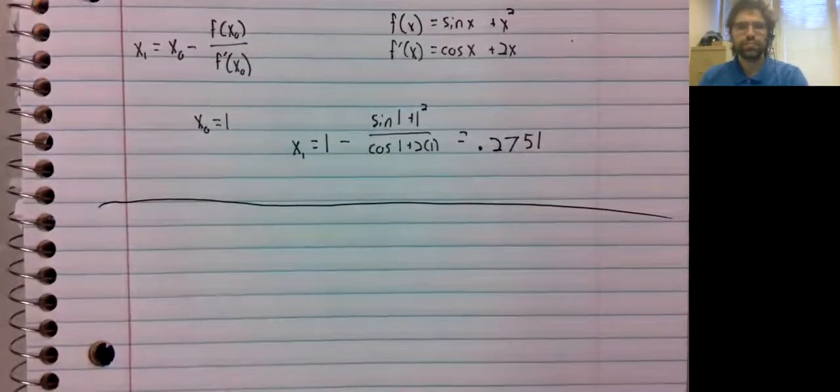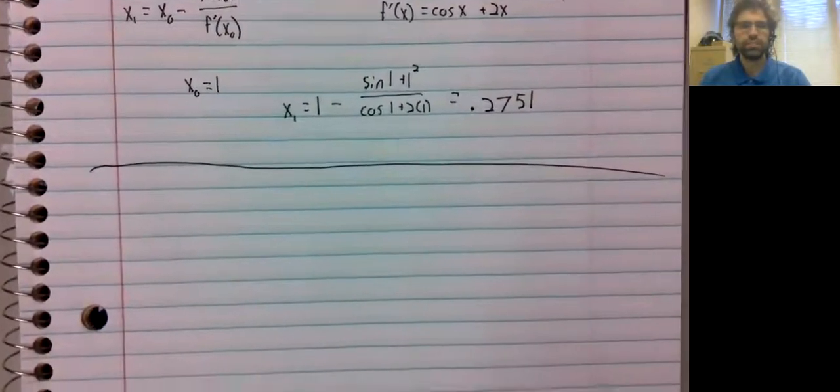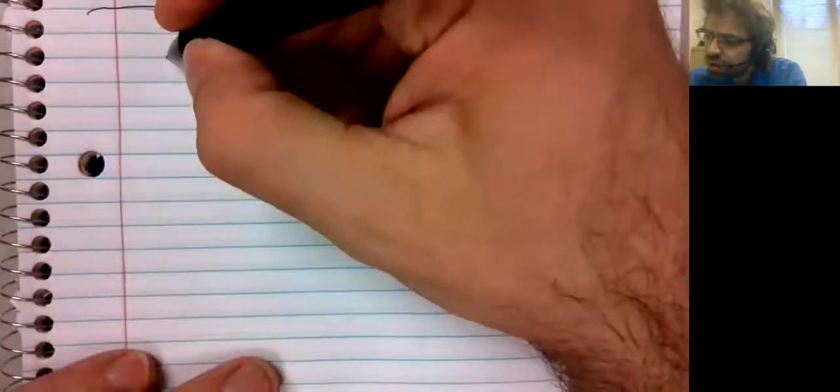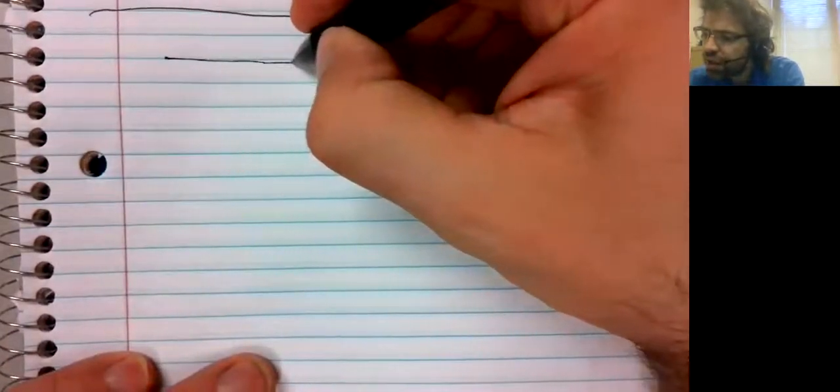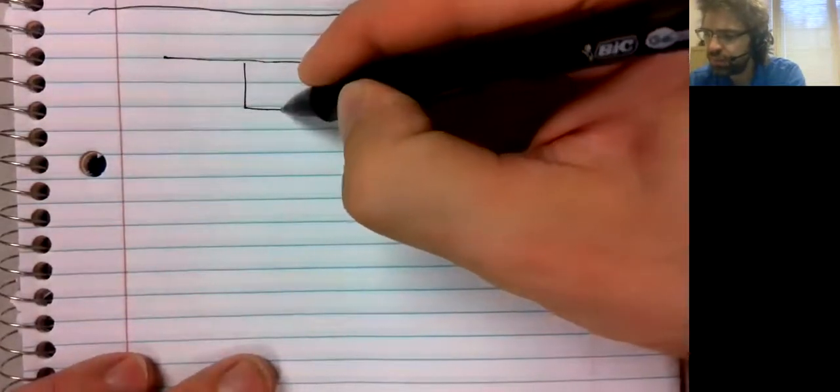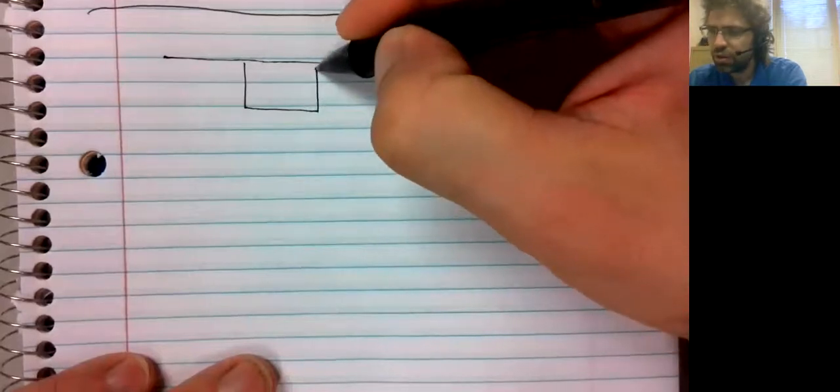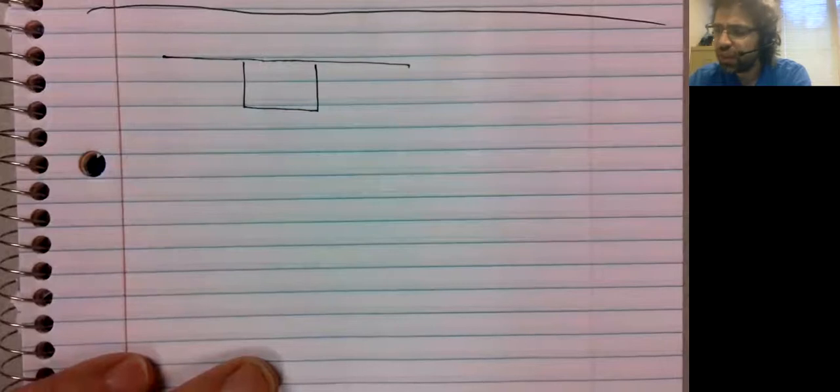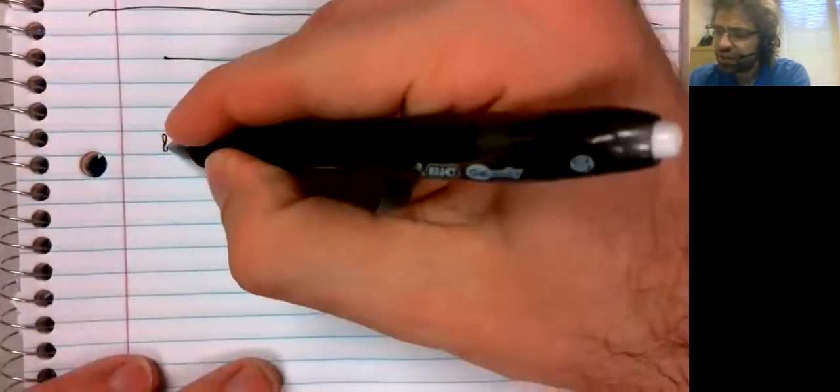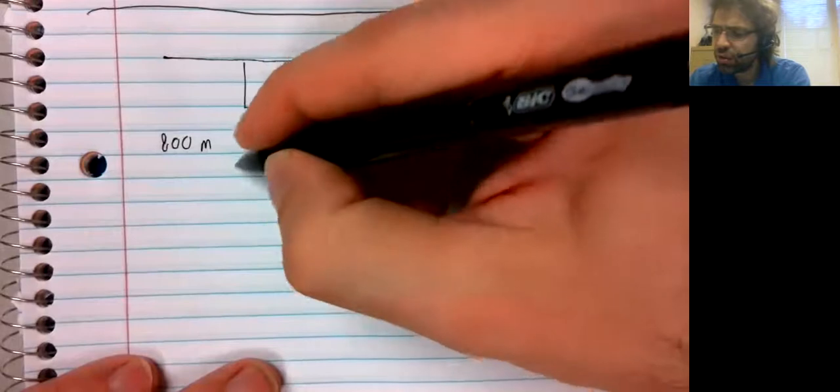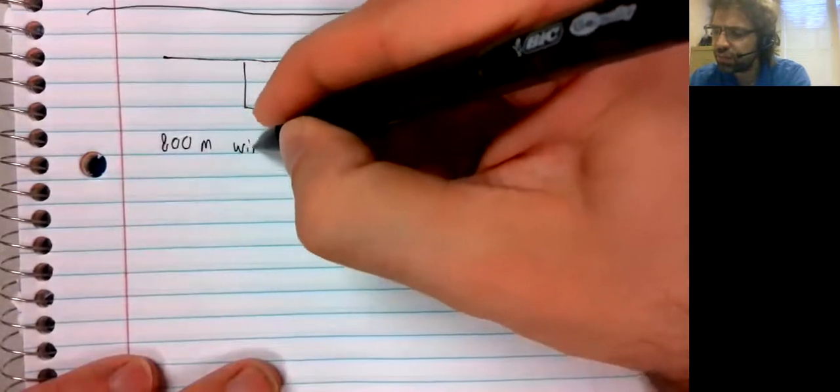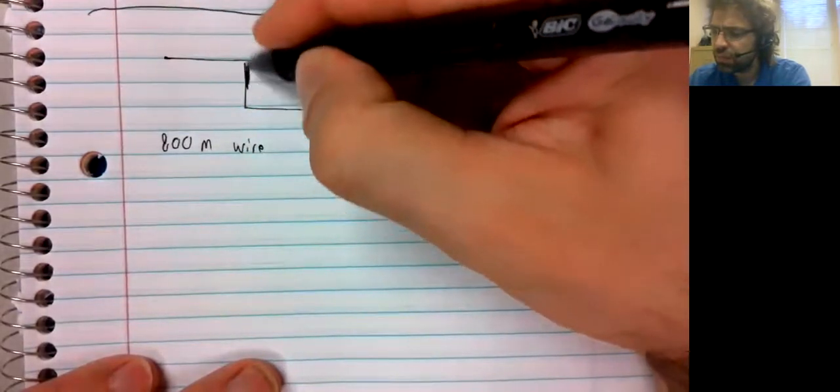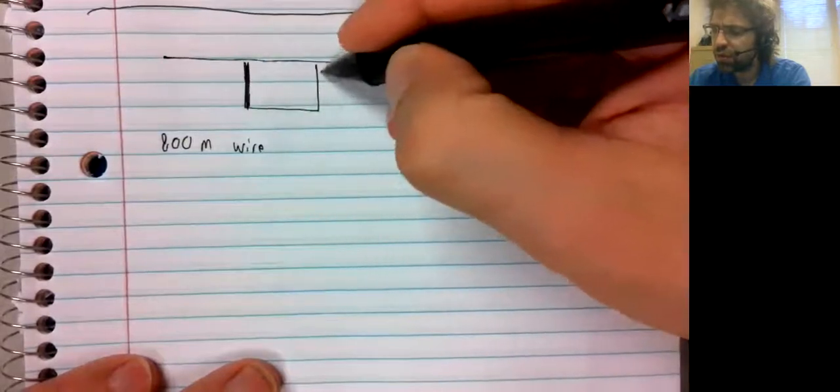And ten, here's a pretty classic applied optimization problem. You've got this fence and you've got 800 meters of wire.